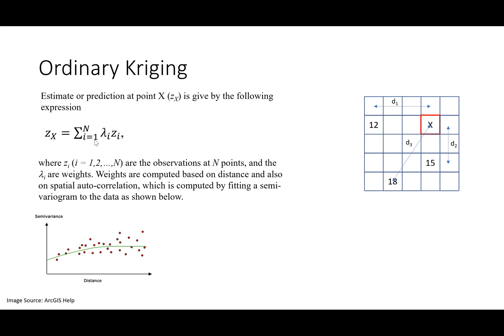The math behind ordinary Kriging is a bit complicated and it is usually used as a statistical approach for spatial interpolation. We can think of inverse distance weighting as a deterministic approach, while ordinary Kriging and its variations are a statistical way of interpolating GIS data.